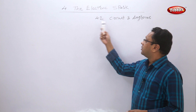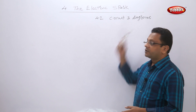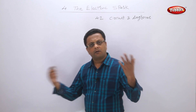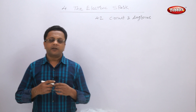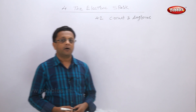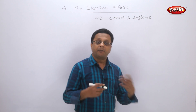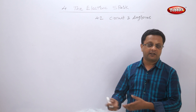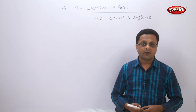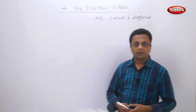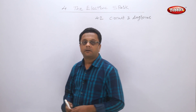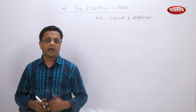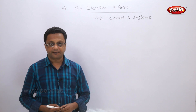Now let us learn about circuits and circuit diagrams. What are circuits? A circuit consists of your appliances like your lights, fans, etc., plus conductors, an electrical source, and some resistances.